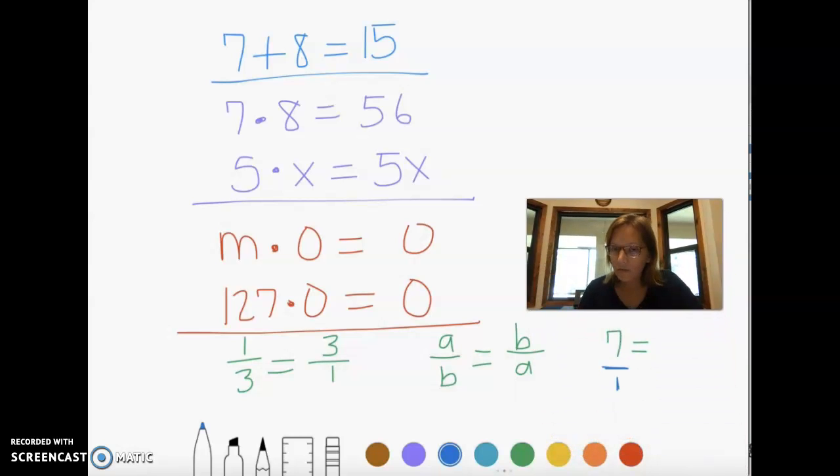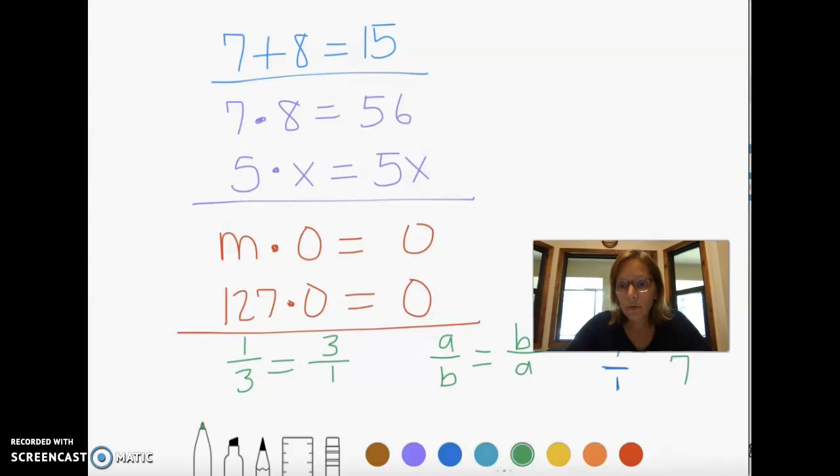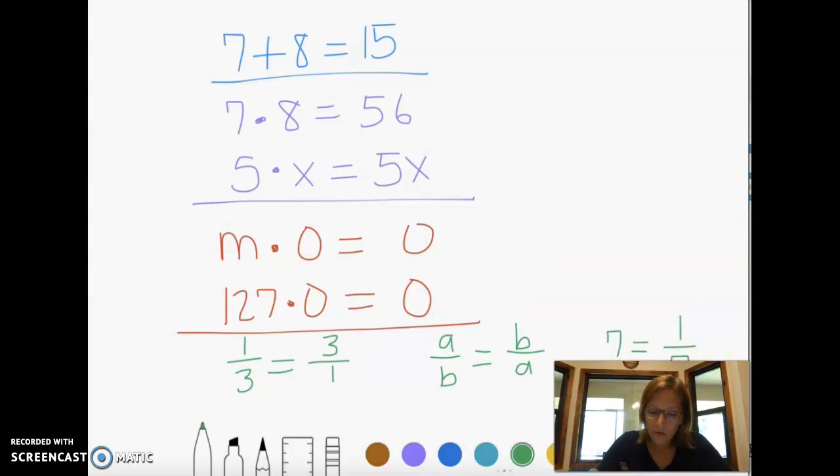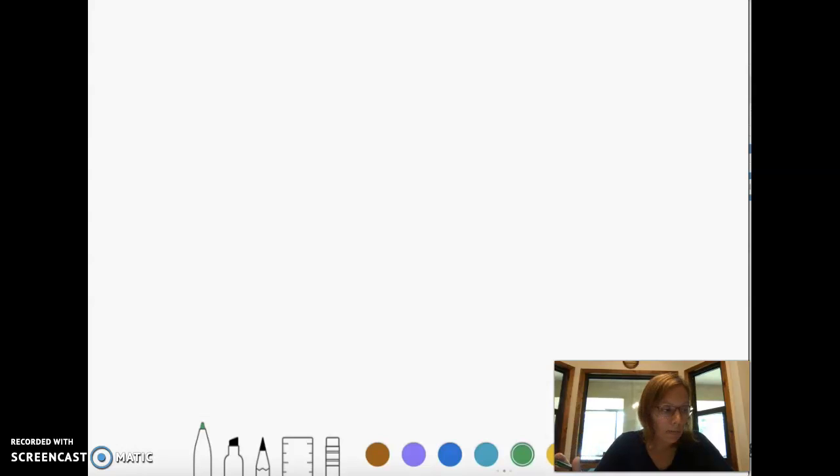So if they're asking us to find the reciprocal of 7, I need to draw that imaginary 1 on the bottom. Then I can flip it and have the reciprocal. All right. That is the identity properties that you went over last week. So now let's briefly review the equality properties. So the equality properties are a little more tricky.